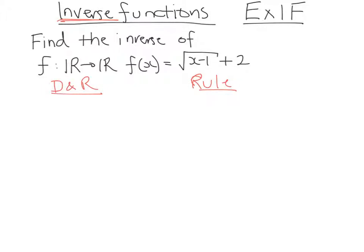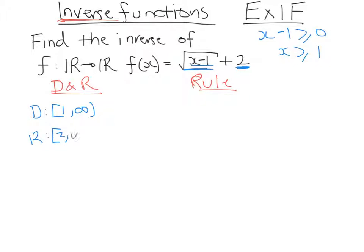Now, if we have a function and we need to find the inverse, first of all we need to find the domain and range. The domain for this one: we know that anything under our square root must always be greater than zero. So in our case, x must be greater than one, so our domain will be from one up to infinity. And we know it's been moved two up, so our range will be from two to infinity. Now, these swap across so that the domain of the inverse will be from two to infinity, and the range of the inverse will be from one to infinity.